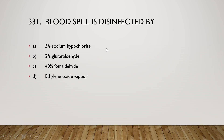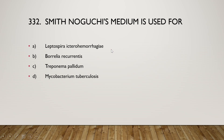The next question: blood spill is disinfected by 5% sodium hypochlorite, 2% glutaraldehyde, 40% formaldehyde, or ethylene oxide vapor? The right answer is option A — 5% sodium hypochlorite is used to disinfect blood spills.